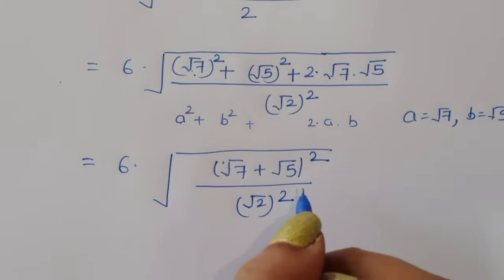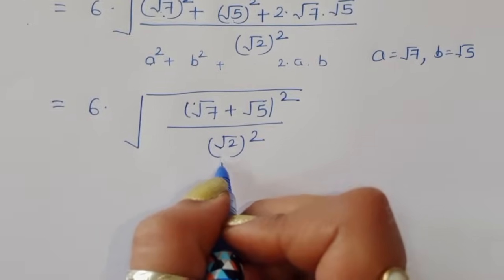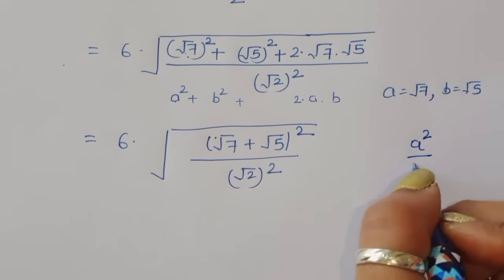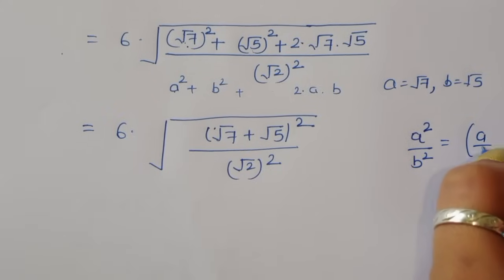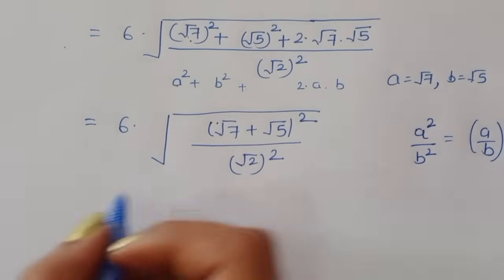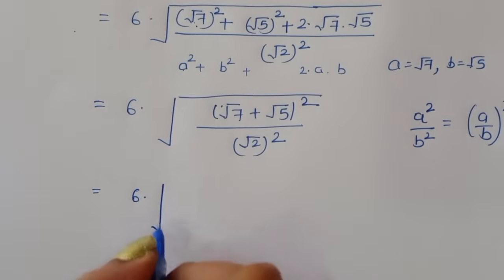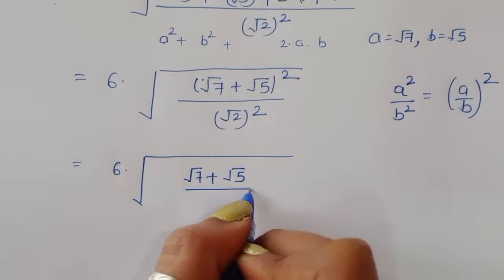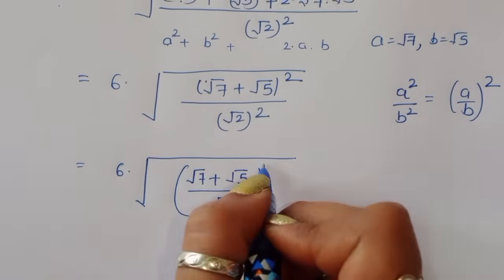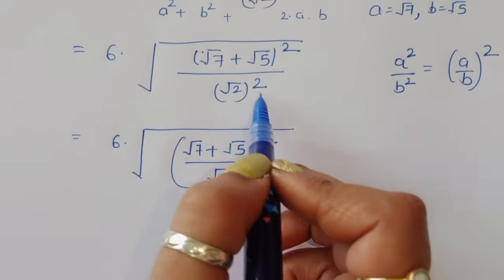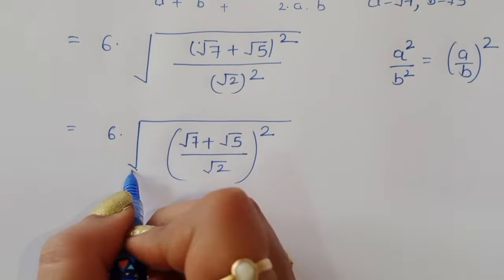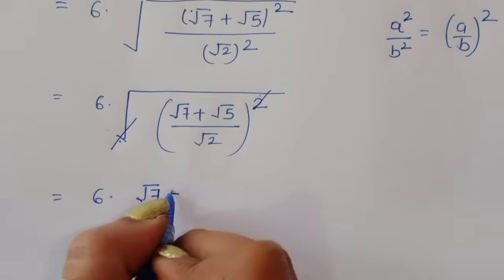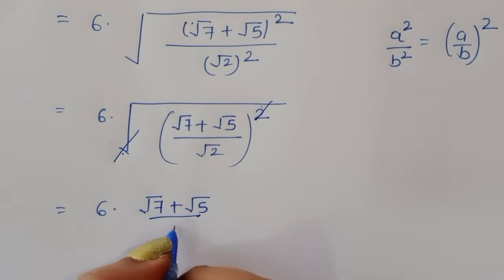Since a squared divided by b squared equals (a over b) squared, we can write this as 6 times square root of (square root of 7 plus square root of 5) over square root of 2, whole squared. The square cancels with the square root, giving us 6 times (square root of 7 plus square root of 5) divided by square root of 2.